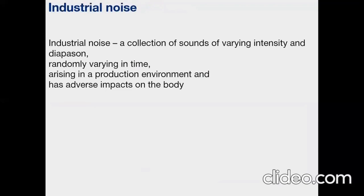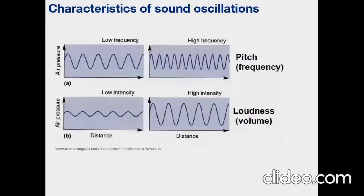Industrial noise is a collection of sounds of varying intensity and frequency range, randomly varying in time, arising in a production environment and having adverse impacts on the body. When operating a variety of equipment — with riveting presses, working on machinery, transport — sound waves are generated. They are transmitted to the air and spread in it. The sound waves spread from the source in the form of zones of condensation and dilution of air. Mechanical oscillations are characterized by amplitude, or intensity, and frequency. The amplitude of the oscillation is determined by the scope, and frequency by the number of complete oscillations per one second.